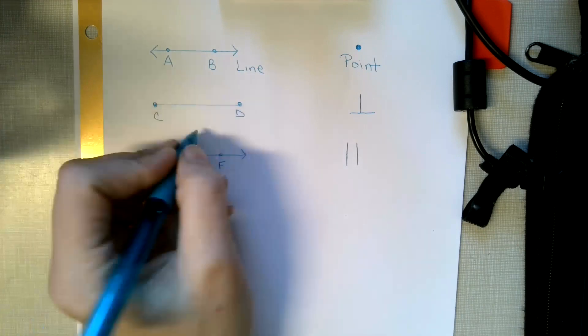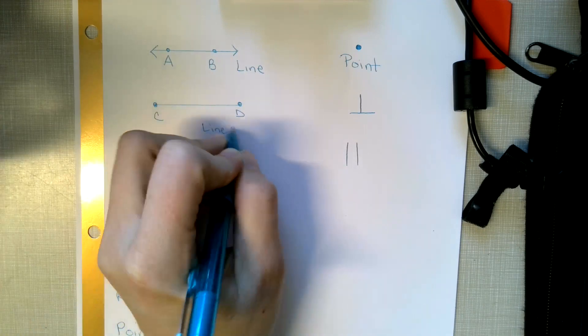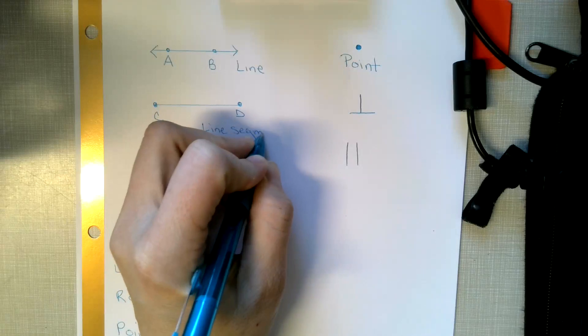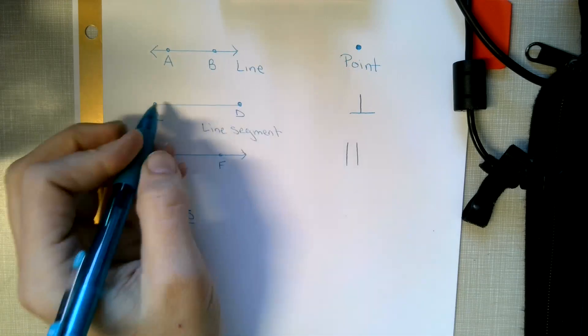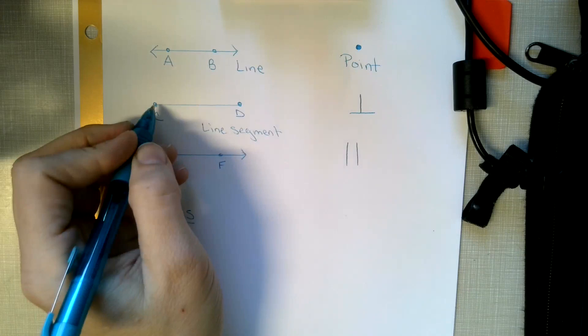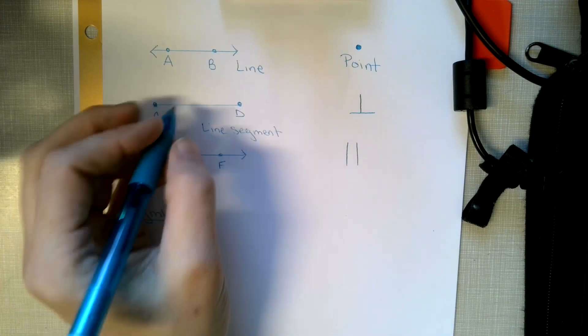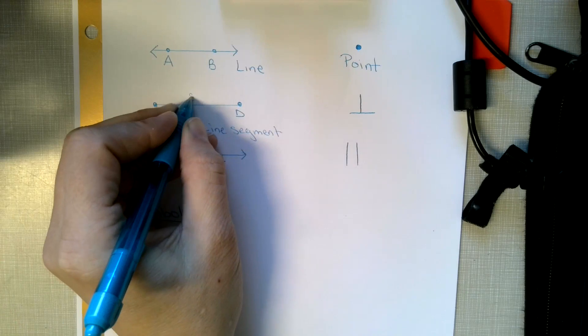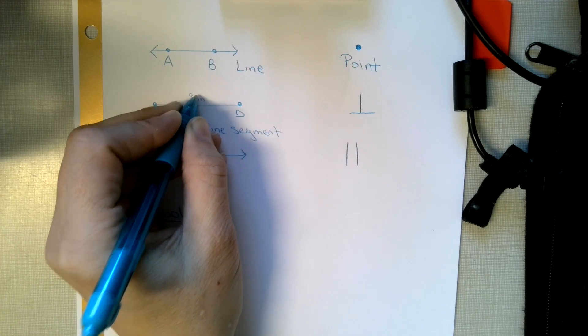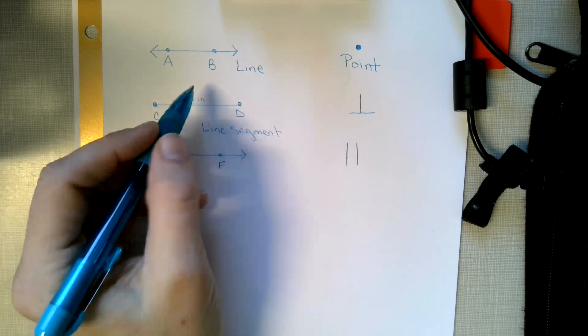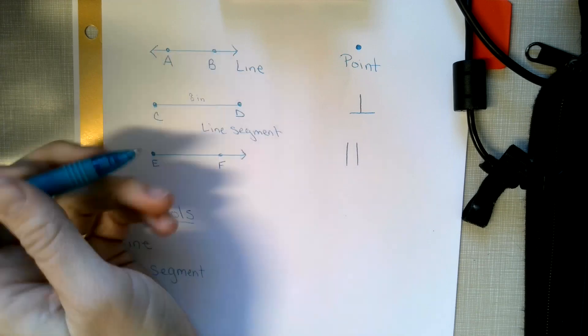This is a line segment. Now a line segment has two distinct endpoints. It has ends. That means this does not go any farther than here. You can actually give a line segment a distance. So I could say, hey, this is eight inches if I wanted to. It can have a fixed distance, whereas the line cannot.